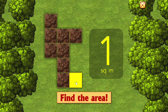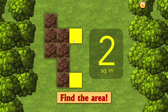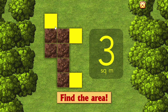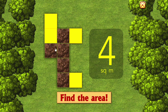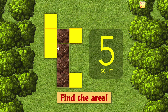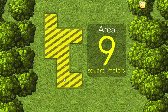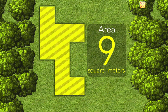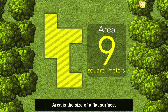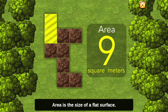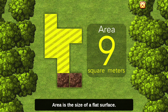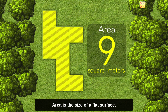One, two, three, four, five, six, seven, eight, nine — nine square meters. Area is the size of a flat surface.